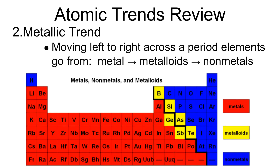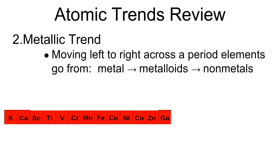The second trend is the metallic trend. It states that as I move from left to right across the period, the elements go from metal to metalloid to nonmetal. You can simply think of this as: as I move from left to right across a period, I become less metallic. In group four, period four, we have metals, then metalloids, then nonmetals.